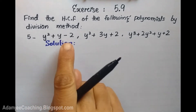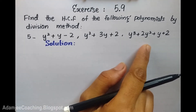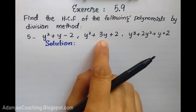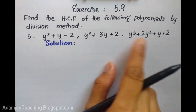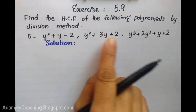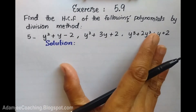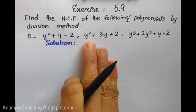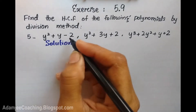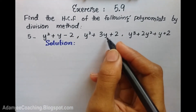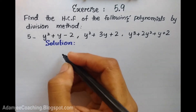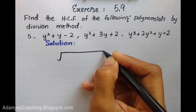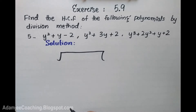Now here we are looking at polynomials. When we have three polynomials, we keep them in the division box. The third one will be in the final position. We start with the first two — we put the bigger values in the division box first.